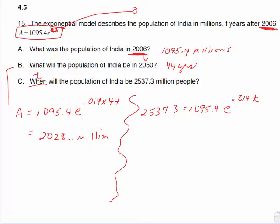This is our same deal. We need to get this exponential part isolated before we do any more solving. This is 1,095 times that. So just divide both sides by 1,095.4.